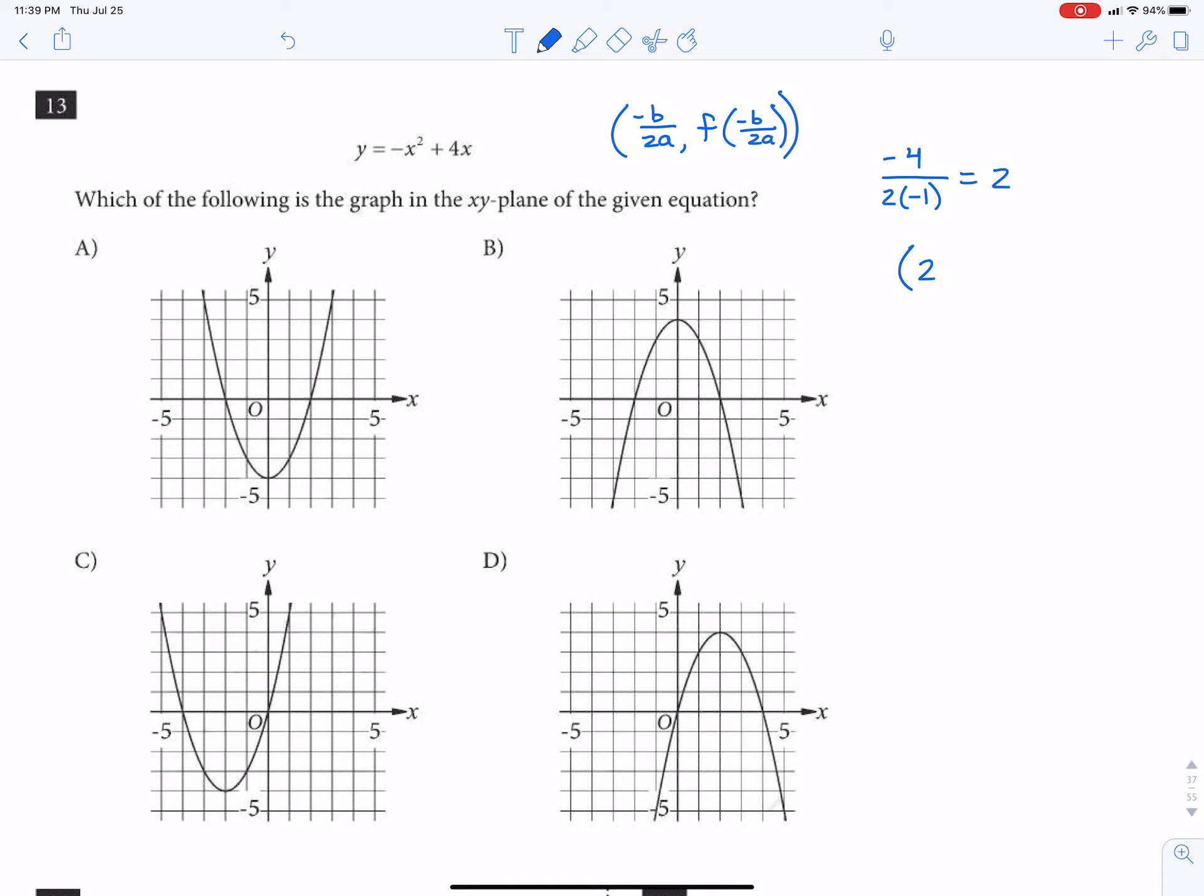So that eliminates A, that eliminates C, that eliminates B, and in fact it must be D because the x value of the vertex is 2.